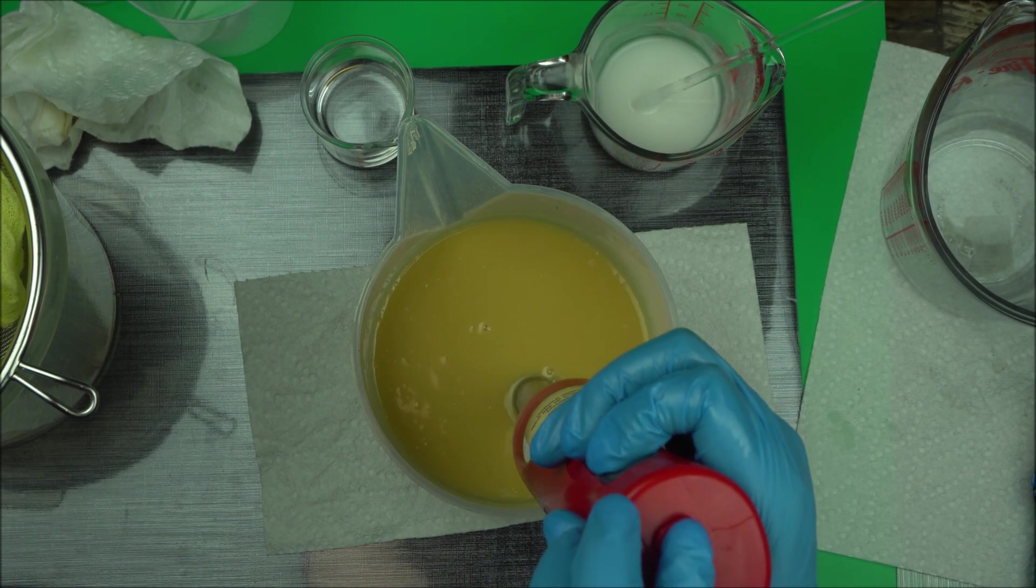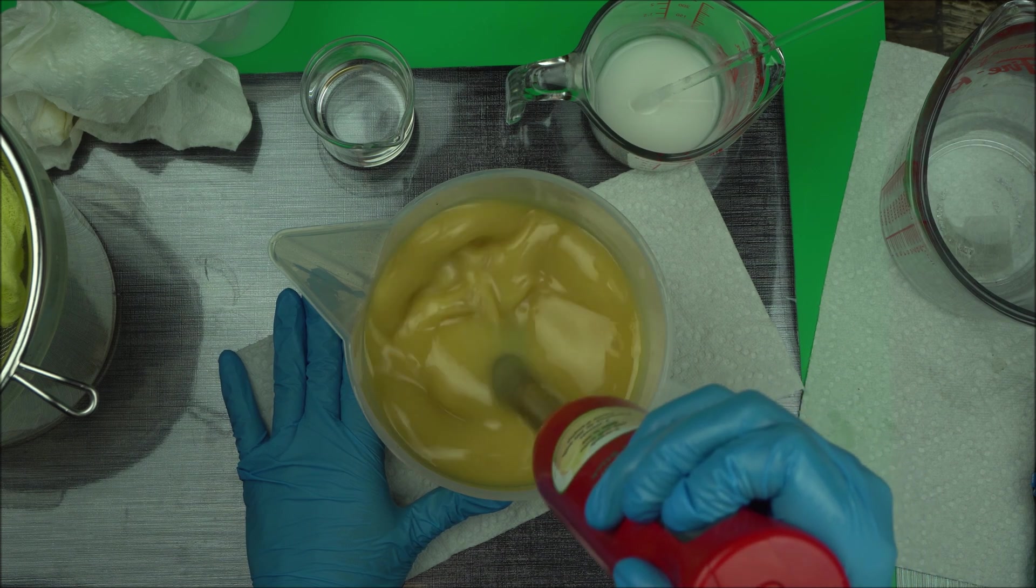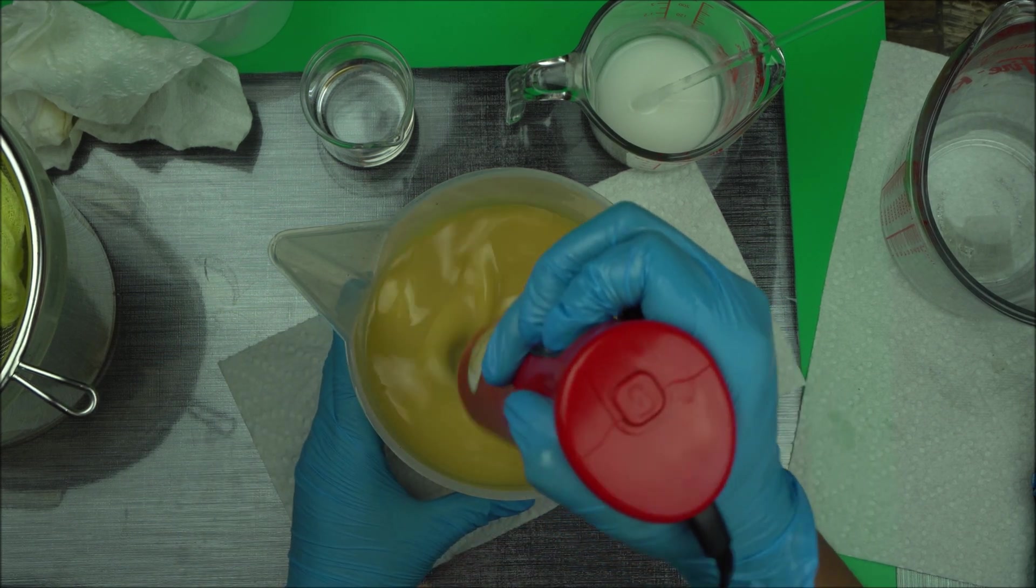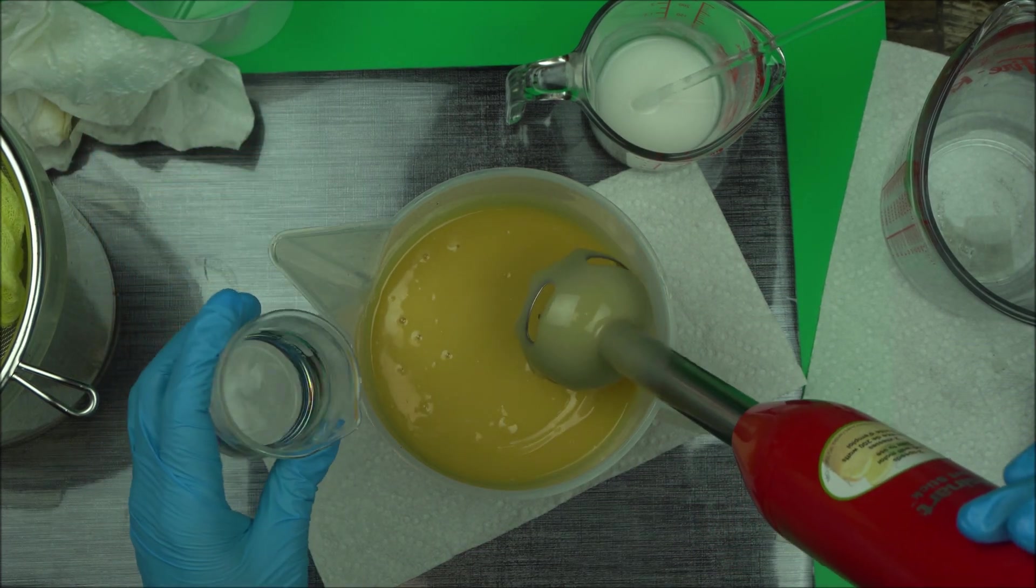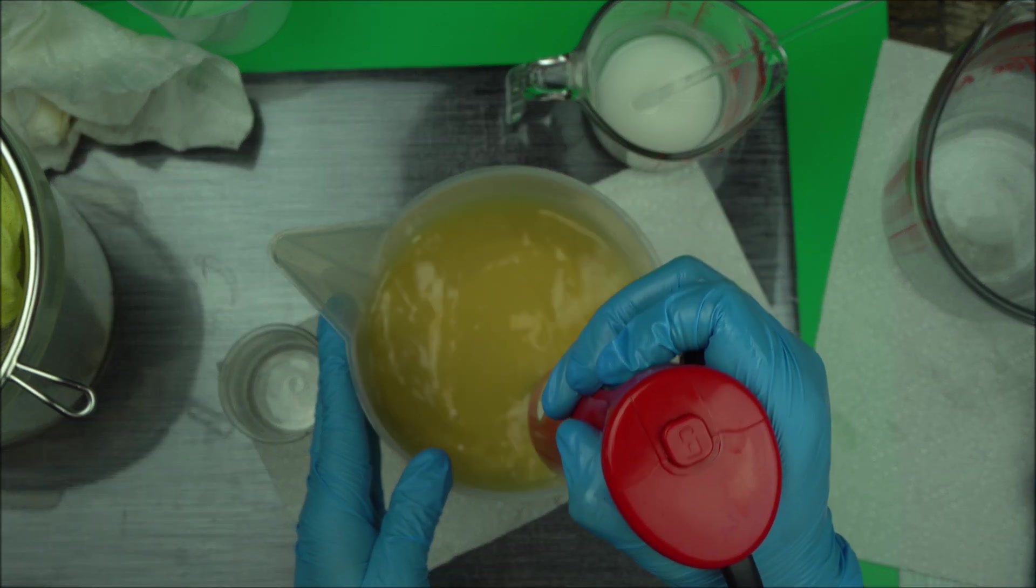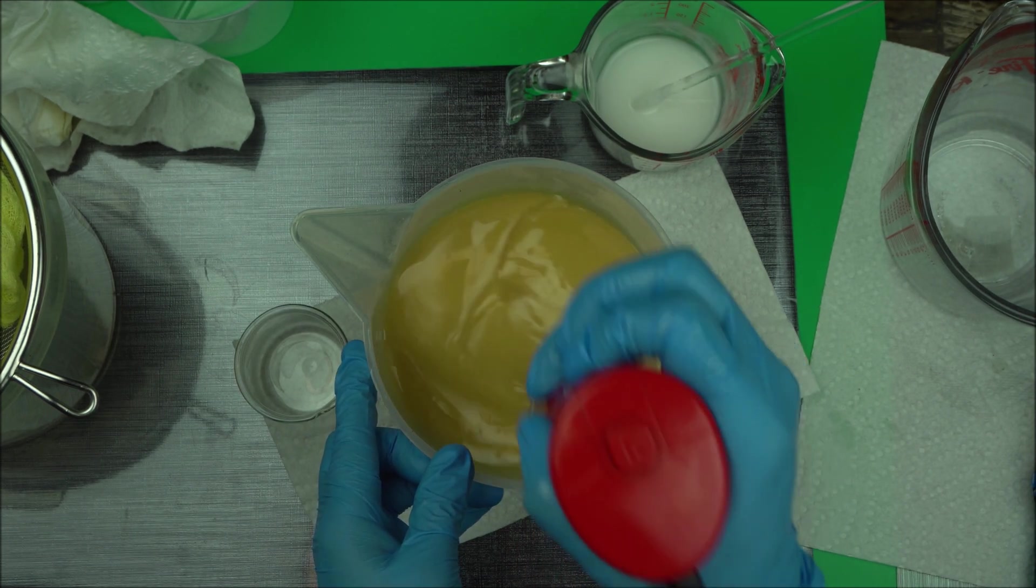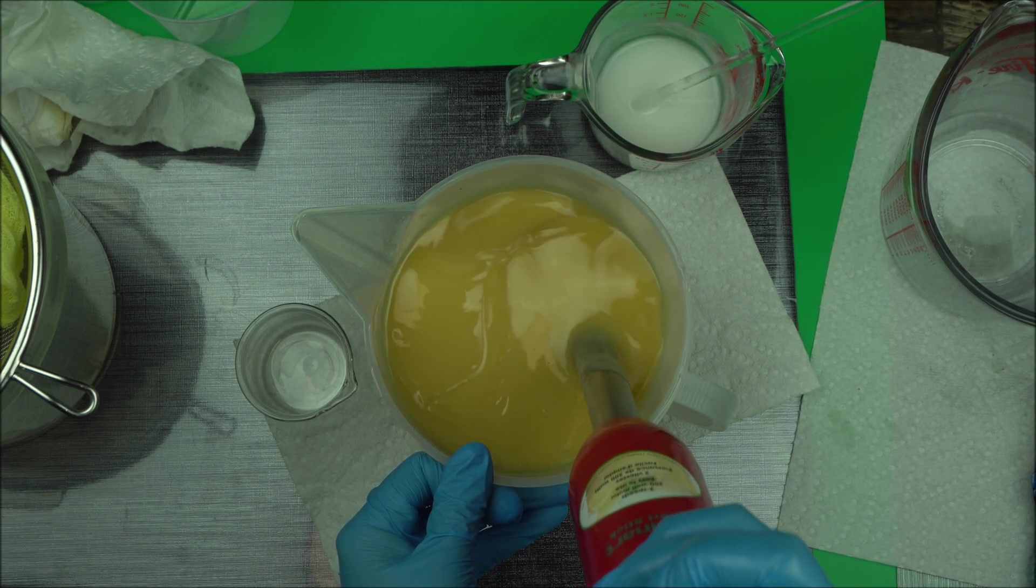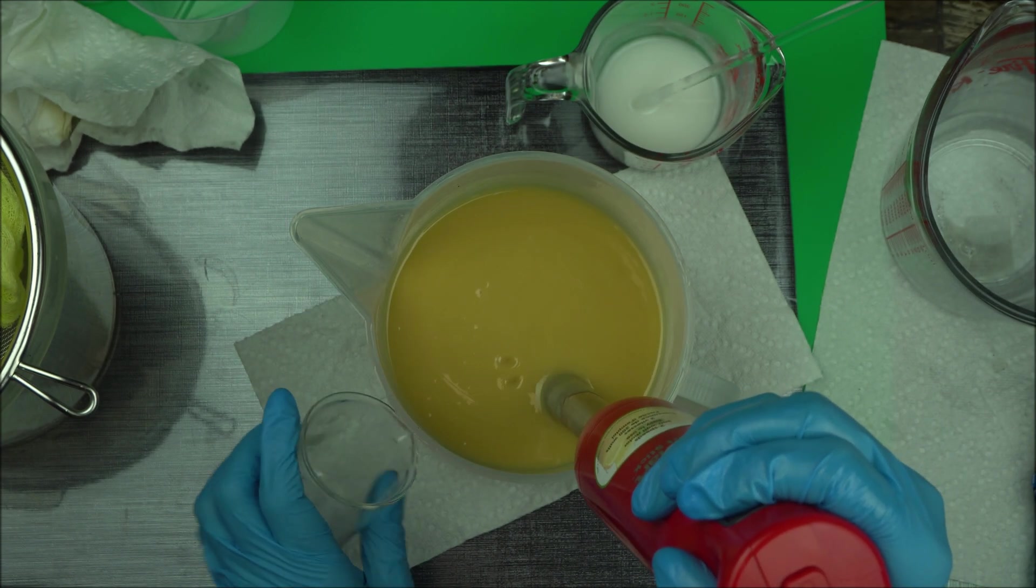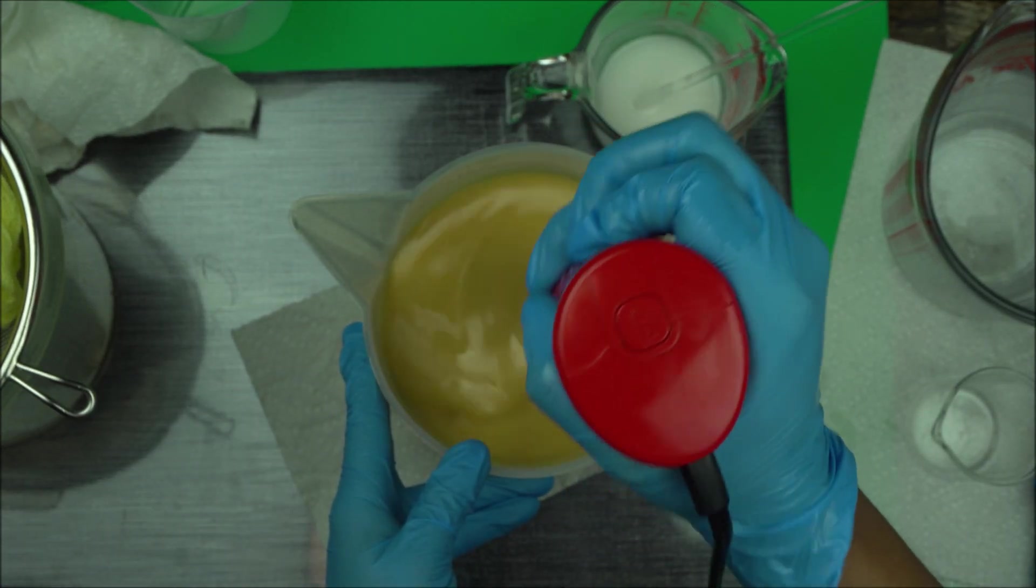When you reach a light trace, you're going to add your D-limonene. I think we have reached a light trace. Now add your D-limonene and blend very well. It's a powerful degreaser, so you want to blend it very well. It's a very important active ingredient you want in our soap.